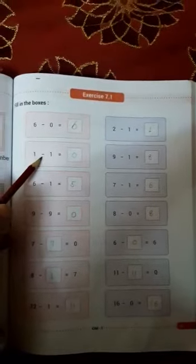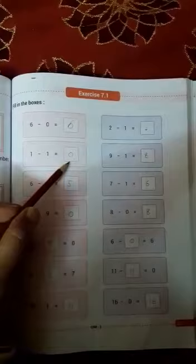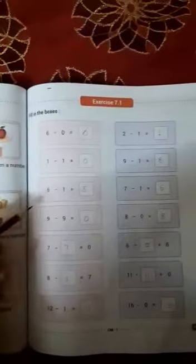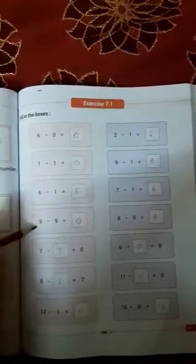Ab next is agar hum same number ko minus kar degi, to answer is 0. 1 minus 1, 0. Next, 6 minus 1, 5. 9 minus 9, 0. Similarly other blanks, do it yourself. Now come to exercise 7.2.